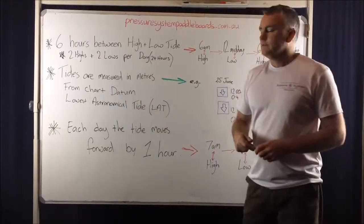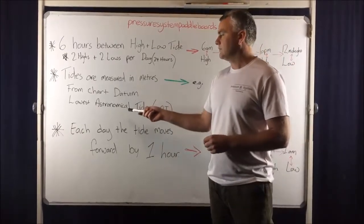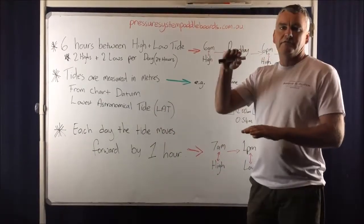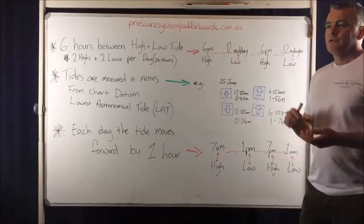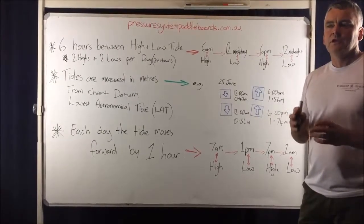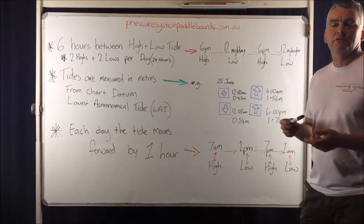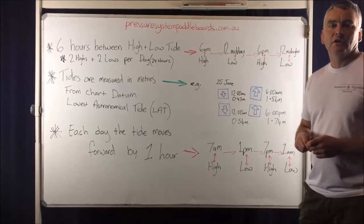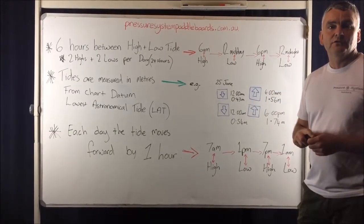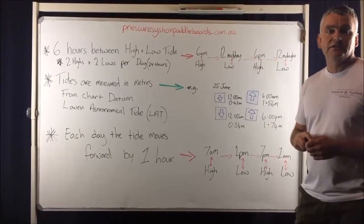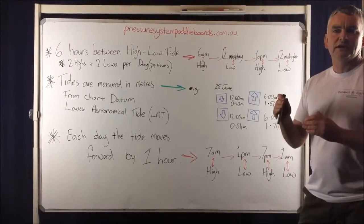Now the tides are measured in metres. And these measurements are taken from what's called chart datum. Now chart datum is the lowest astronomical tide. So then we measure the tide in metres above that line, which is called the LAT line. So the tides aren't like the weather. The weather's quite unpredictable and it's changeable. Whereas tides are very predictable and we can get it precise. So you can go into your local fishing store or your local news agent and buy a tide guide for the whole year. And you'll have accurate precise tides for every day of that year. Or you can jump onto a weather website. I use willyweather.com.au and we'll have a look at a little bit of what they do on my next board.